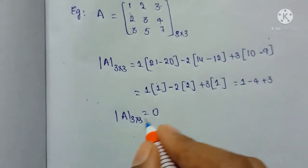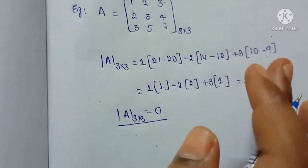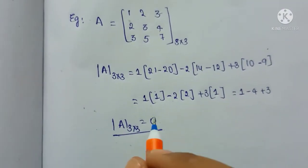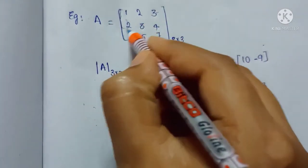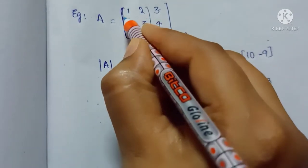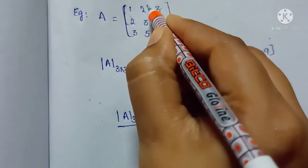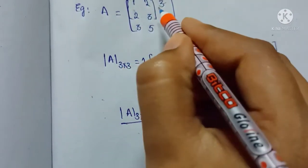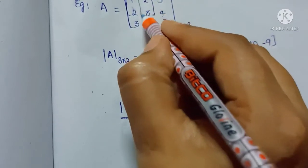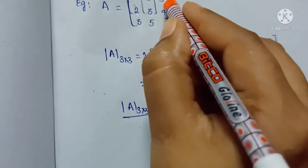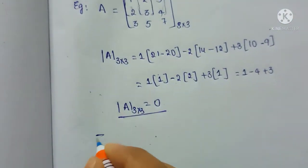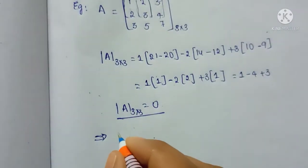Since the determinant is 0, we have to find the minor of this matrix. If the minor is also 0, we move to the 2×2 minor. So let's look at a 2×2 minor of this matrix.